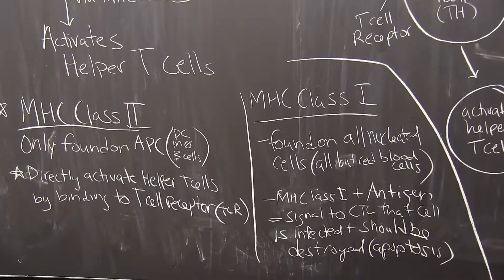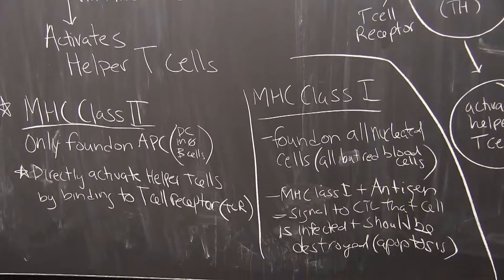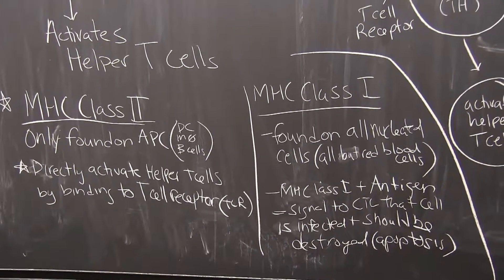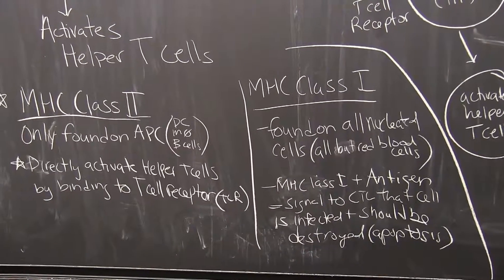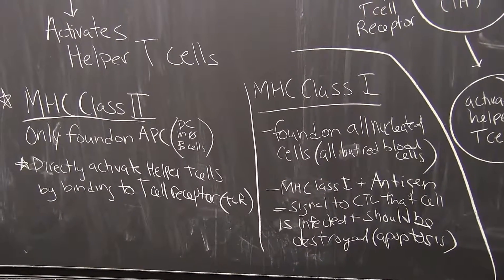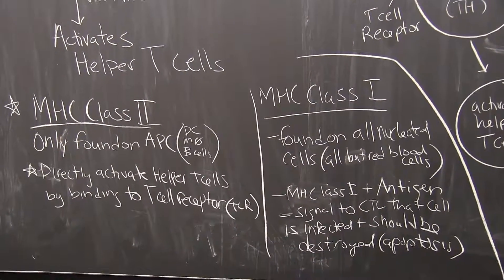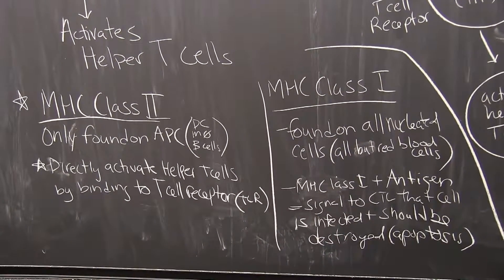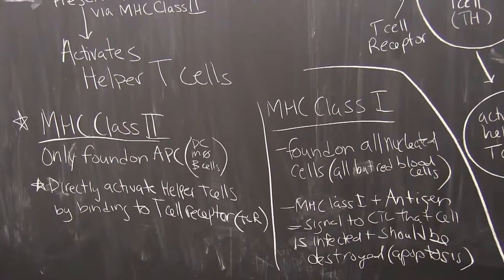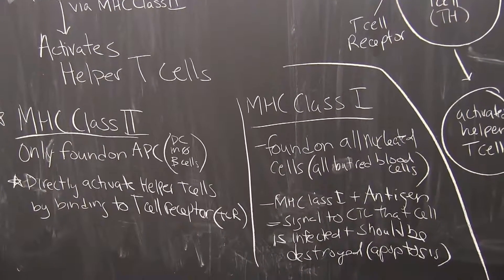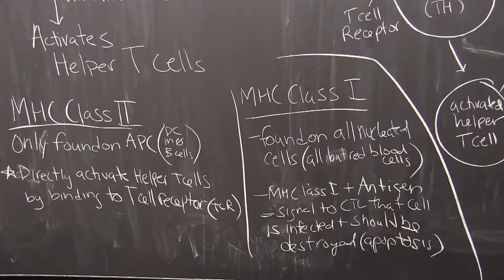So the major difference: MHC class 2 is only found on antigen-presenting cells and activates helper T cells. MHC class 1 is found on every nucleated cell, signaling killer T cells that the cell is infected and should be destroyed.